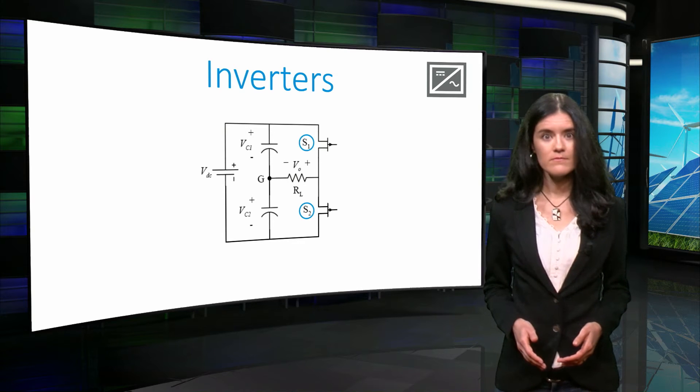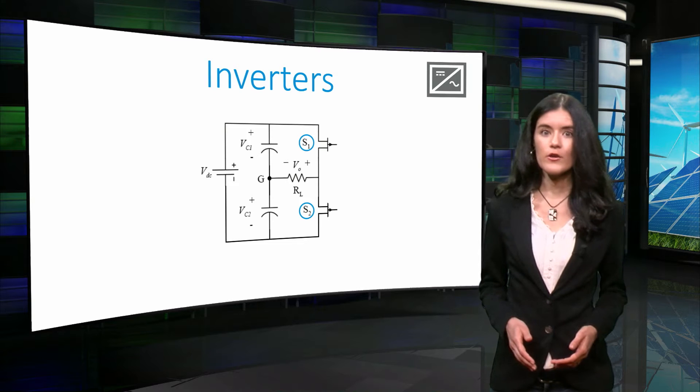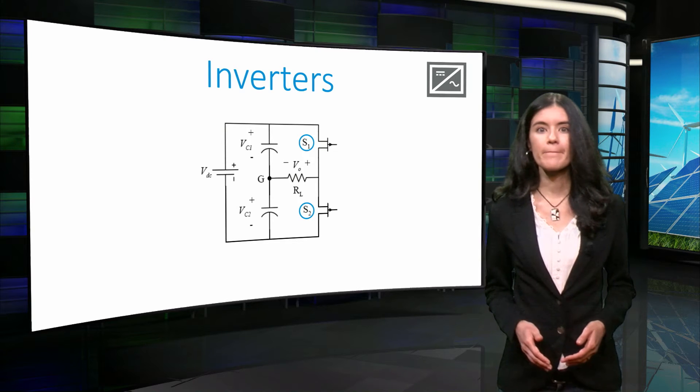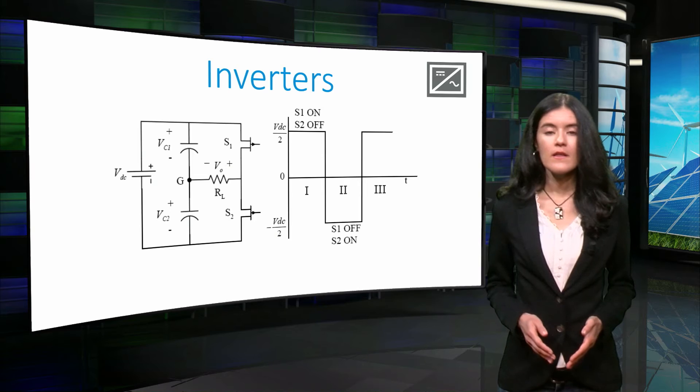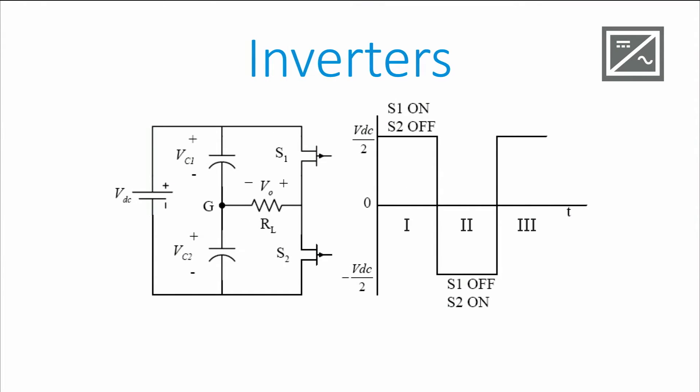Let's assume that S1 and S2 in the figure are controllable switches. Let's consider that the circuit shown has a constant DC voltage at the input. If S1 is on and S2 is off, the circuit will conduct through the highlighted path. In this case, the magnitude and direction of the output voltage is half the magnitude and direction of the input voltage. This corresponds to time periods 1 and 3 in the figure.